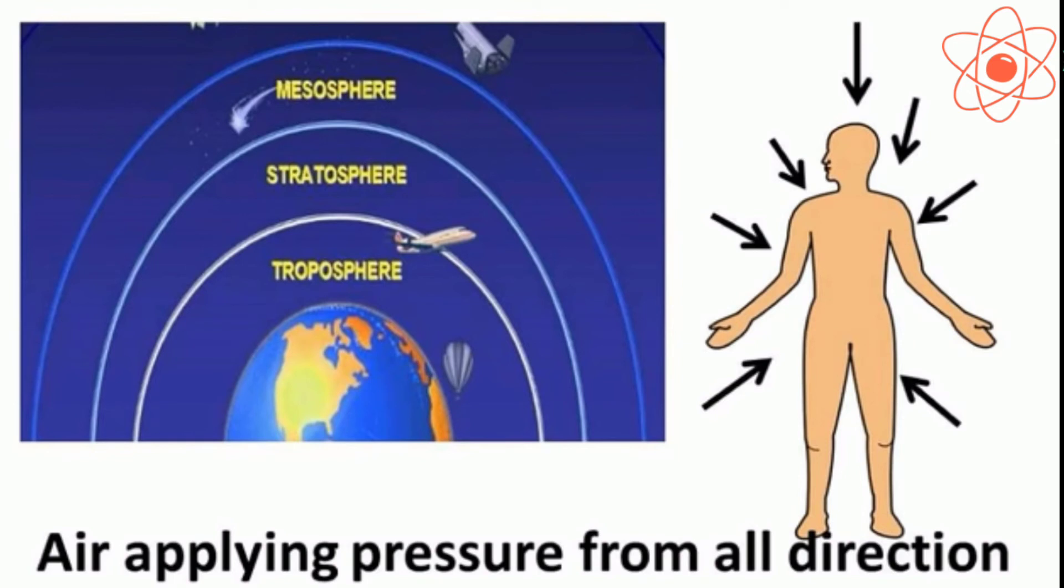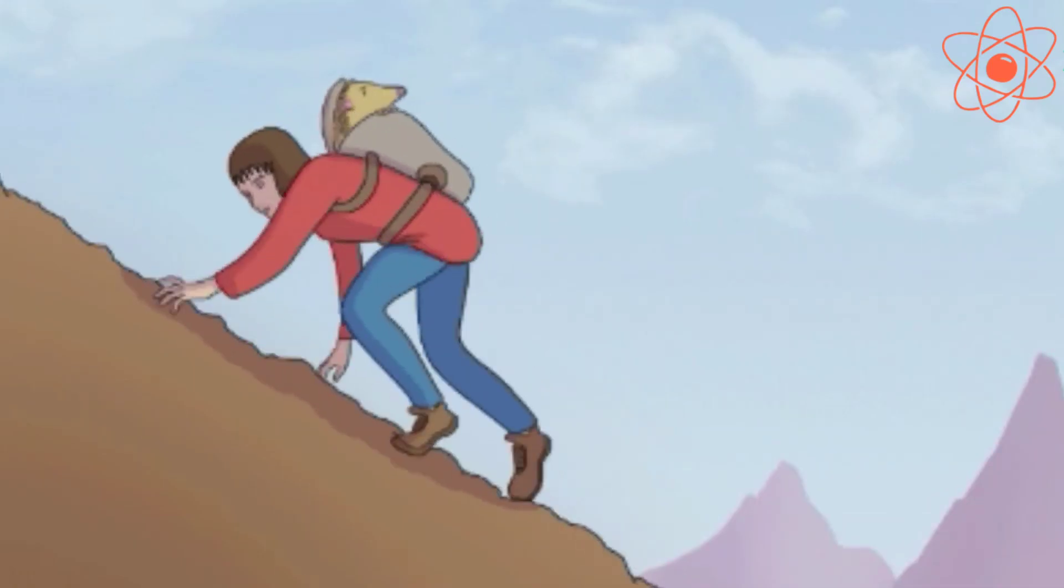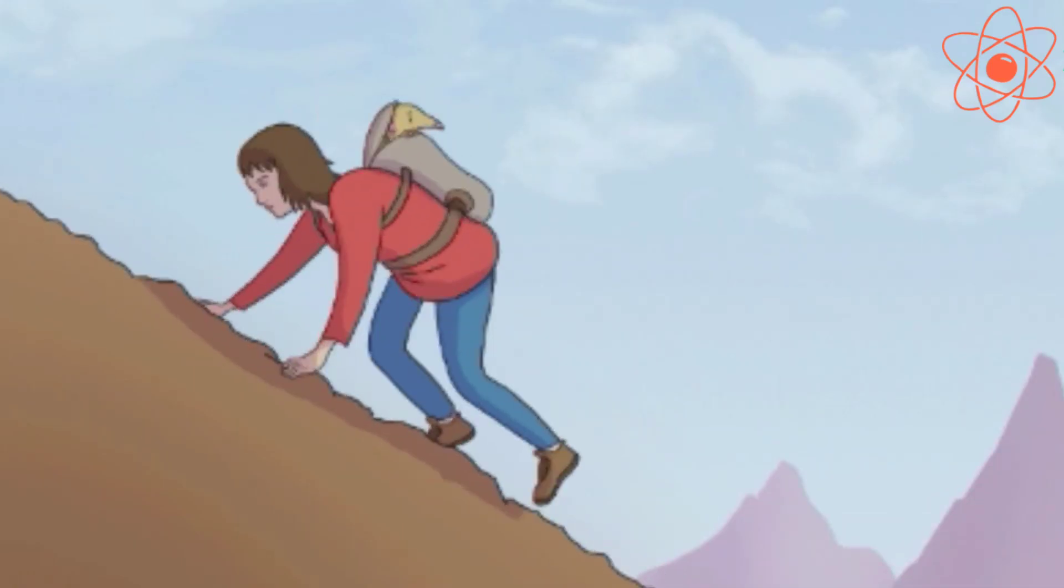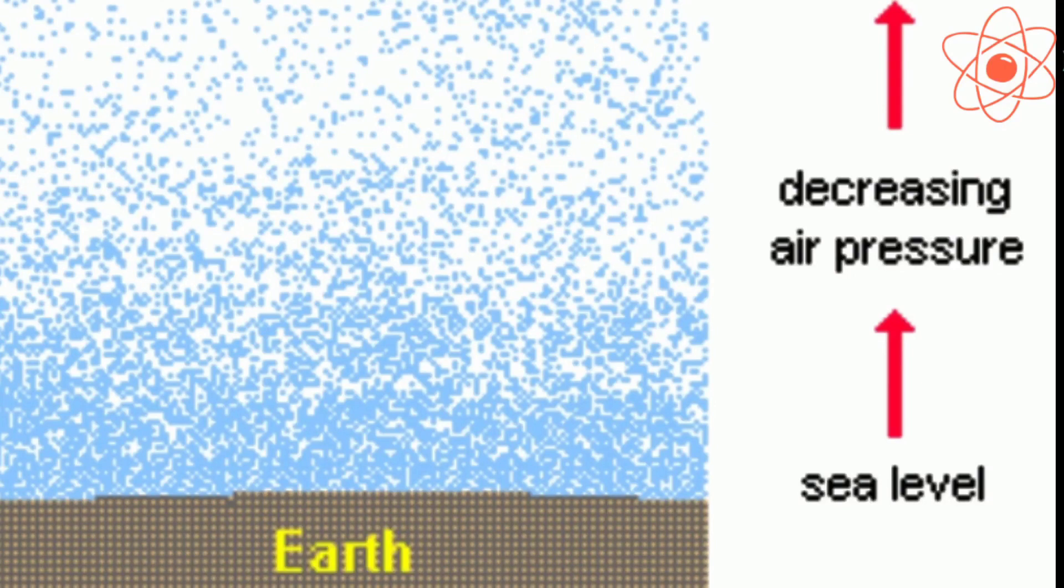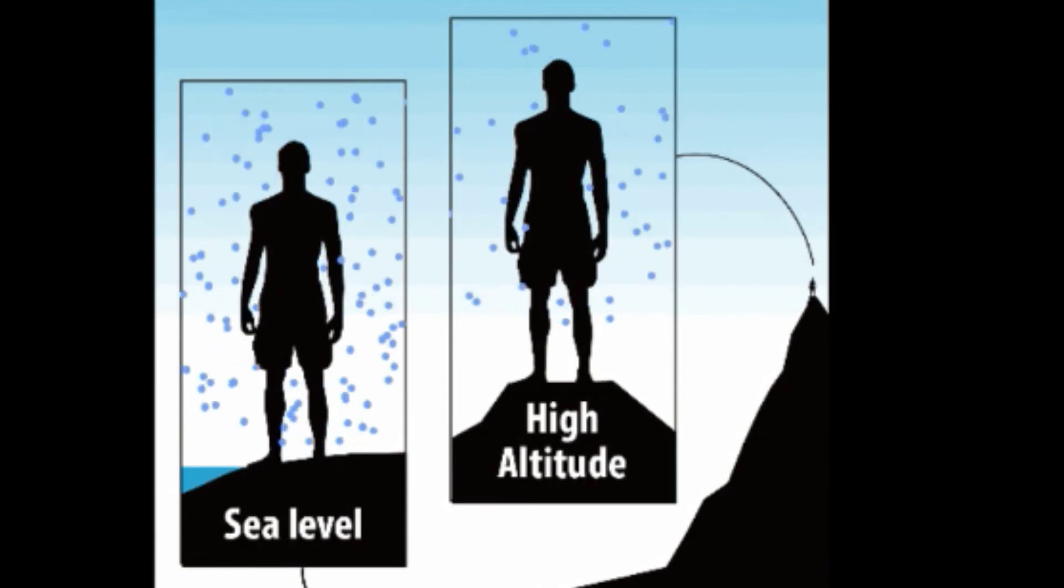This is because atmospheric pressure exerts pressure on our body in an inward direction and blood pressure exerts pressure in an outward direction, so these pressures balance each other. However, if you go to a high altitude, the atmospheric pressure decreases. Hence at high altitudes it is common for people to experience bleeding nose. This is because at high altitudes the external pressure is lower than the pressure within our body.